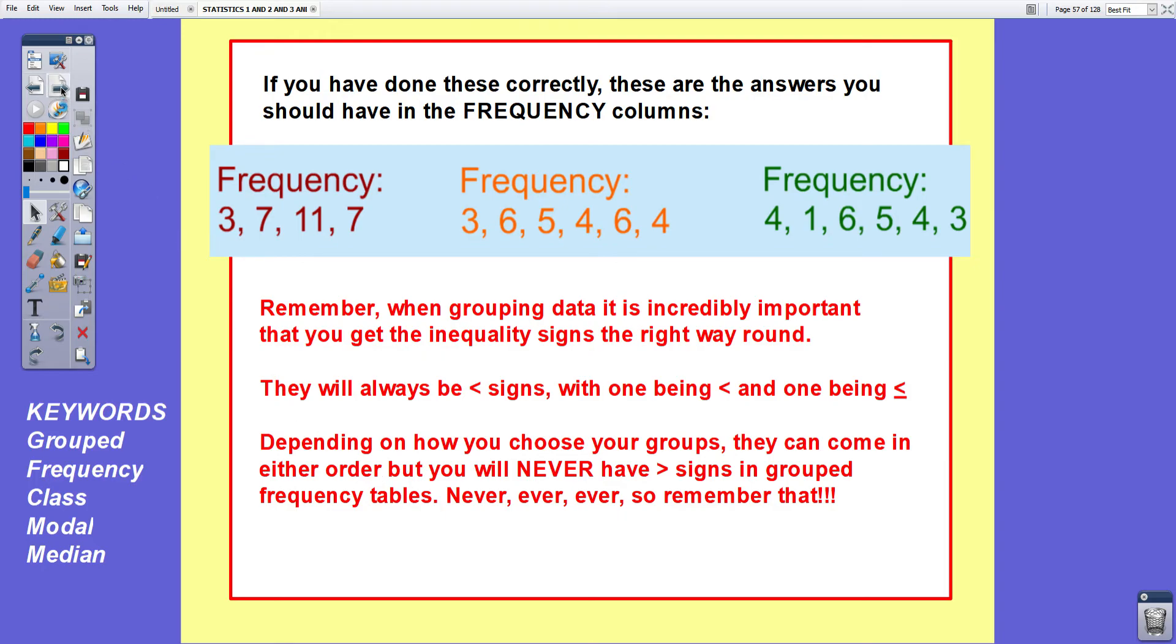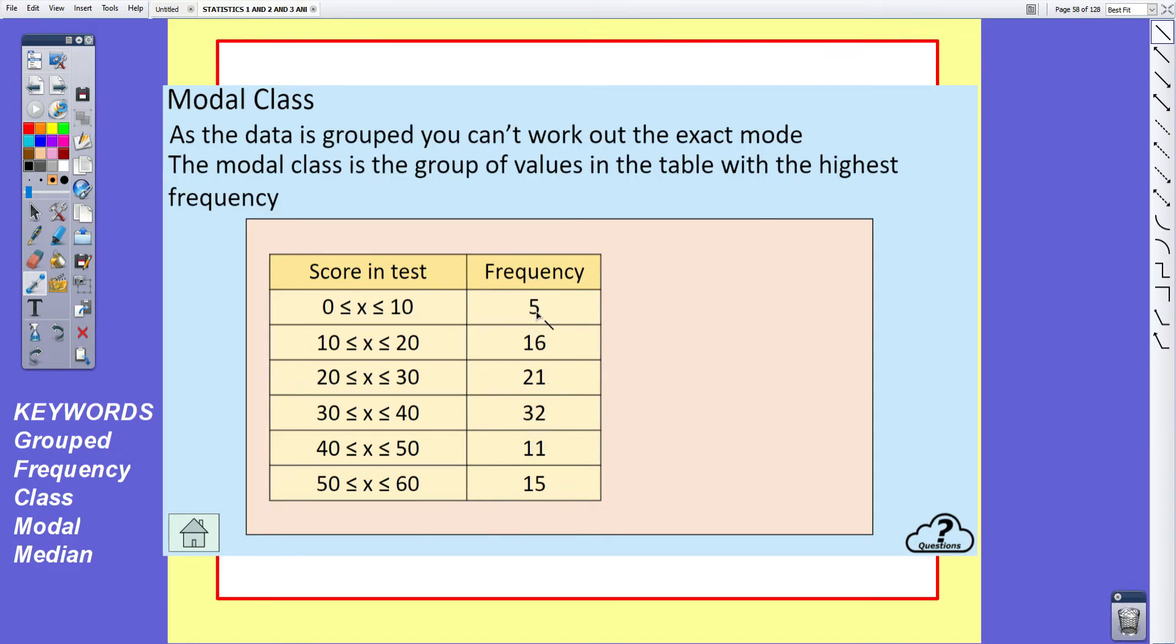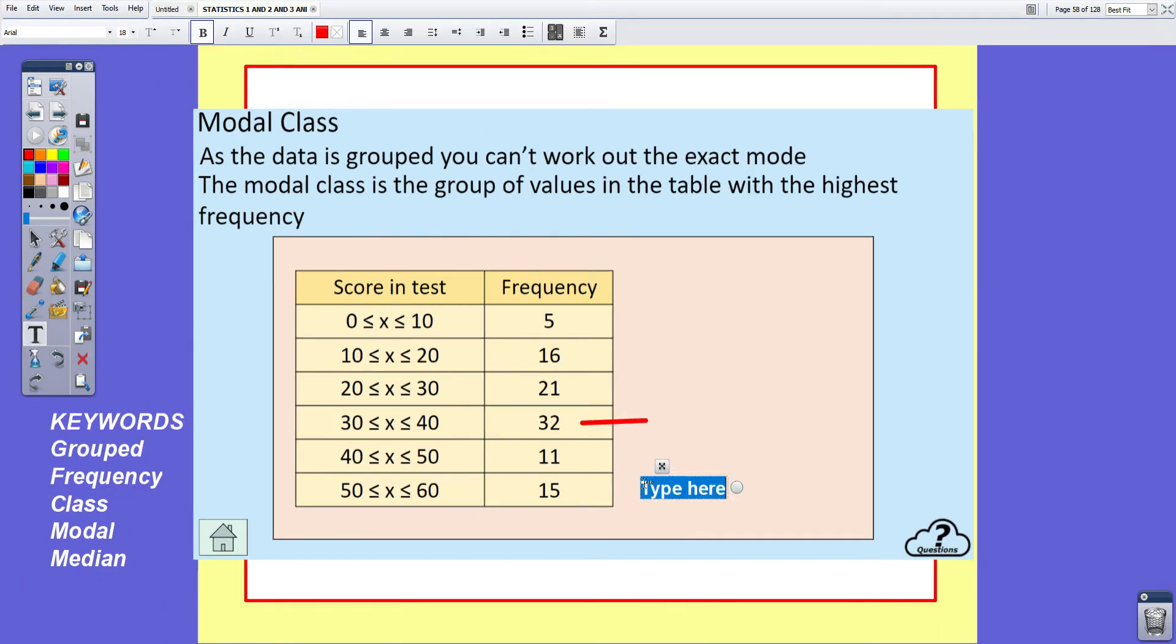Now moving on. Our success criteria for today is not only to know how to complete grouped frequency tables, but how to find the modal class and how to find the median class. The modal class is incredibly simple. If you were able to find the mode from a frequency table last week, then finding the modal class is just as simple. As the data is grouped you can't work out the exact mode, but you can work out the modal class. The modal class is the group of values in the table with the highest frequency.